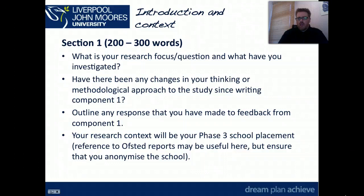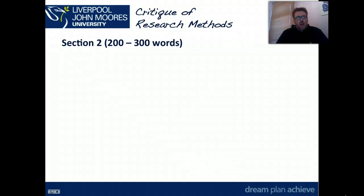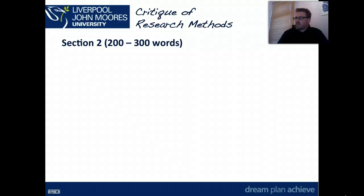But you need to ensure that you anonymise the school, so you're not identifying the name of the school itself in the essay. In section two, which is again quite brief, is your critique of research methods. Remember, research methods are data gathering methods — techniques for gathering data. These can range from interviews, focus groups, questionnaires, but are more likely in the context of this study to be participant observation and document analysis, which are two key bits of data you might have gathered. Essentially in this section, you're critiquing the research methods you've chosen.